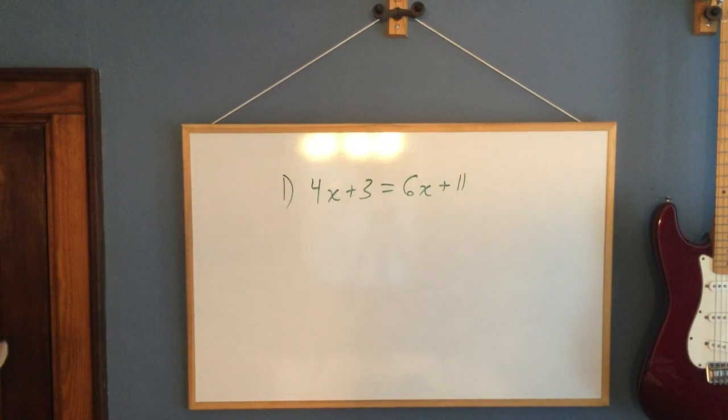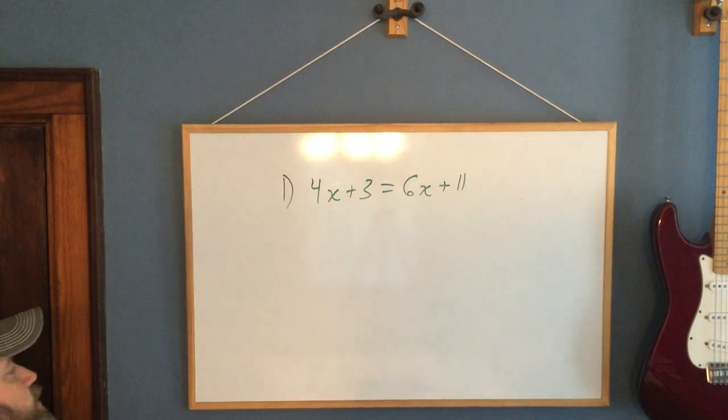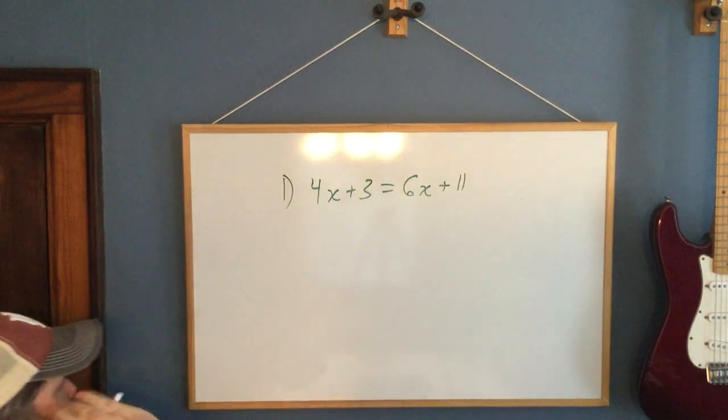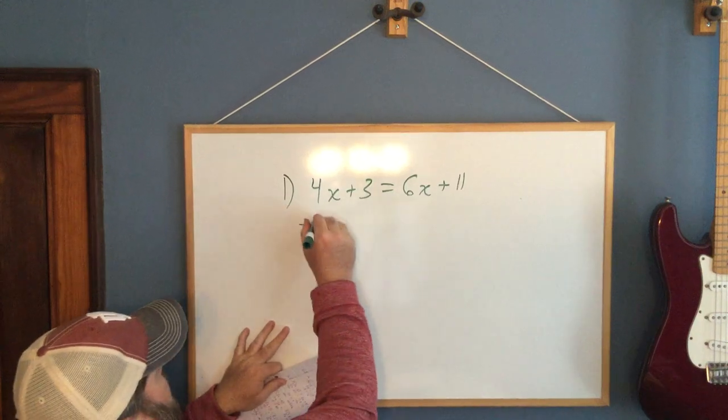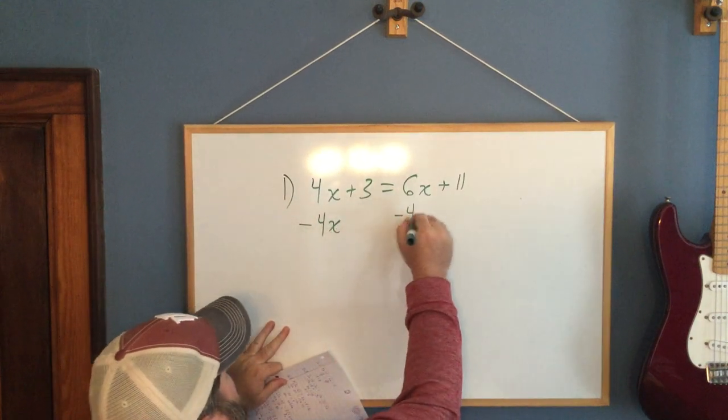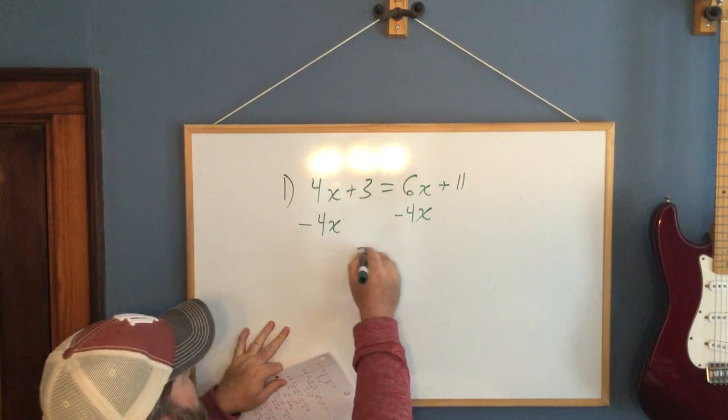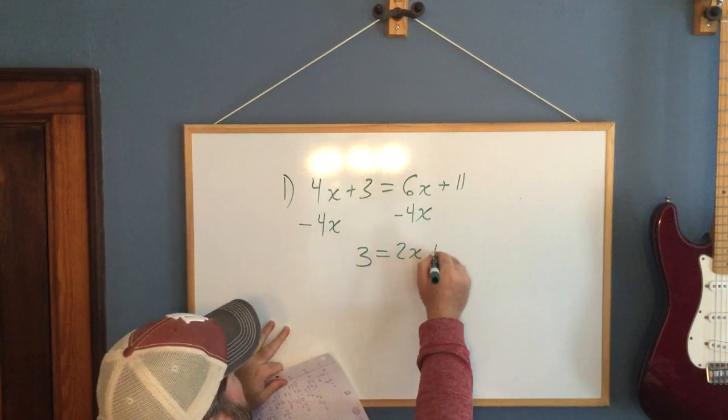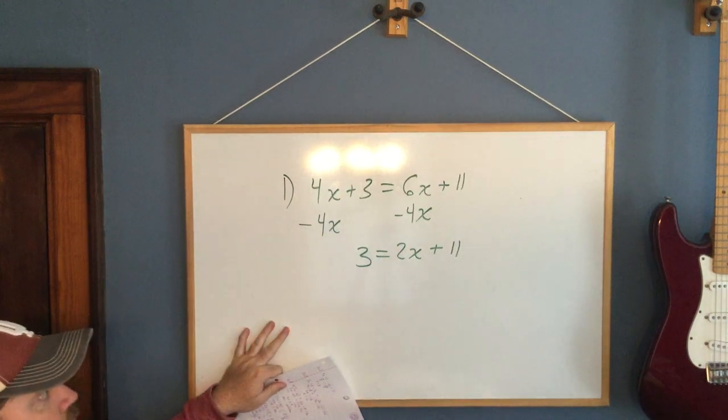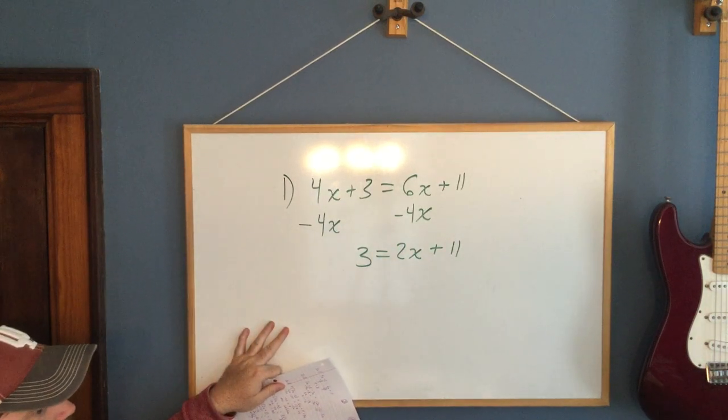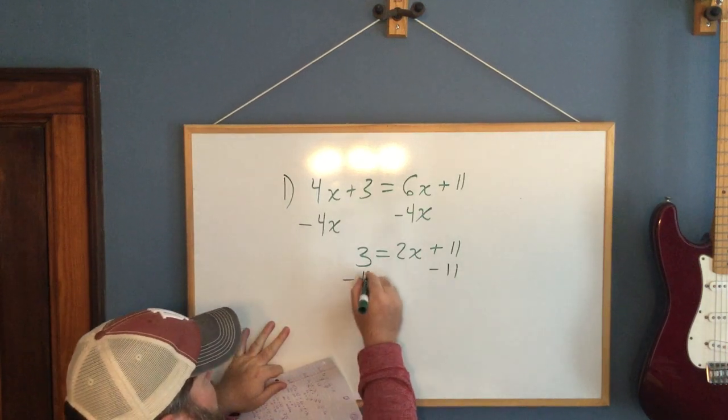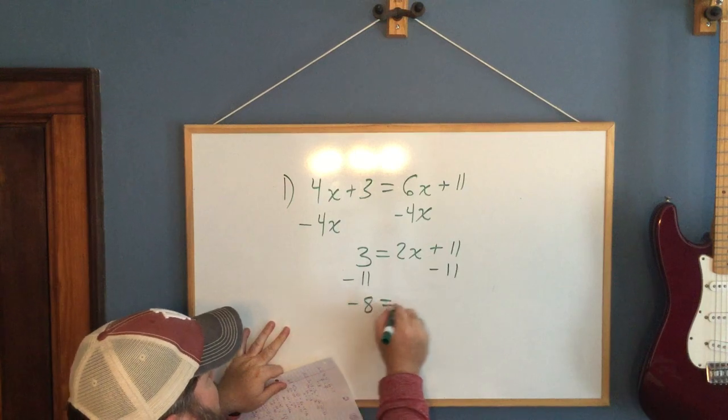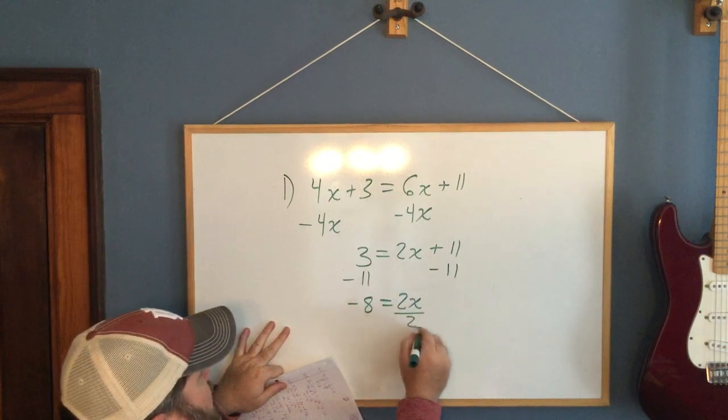I have a variable on both sides. It does not matter which variable you get rid of as long as you get rid of one. I want to get rid of the 4x. So I have minus 4x here. 3 equals 2x plus 11. And now this should look like the homework previously. We're down to a two-step equation. Get rid of the addition or subtraction first. So now I have negative 8 equals 2x. Divide by 2. x equals negative 4.